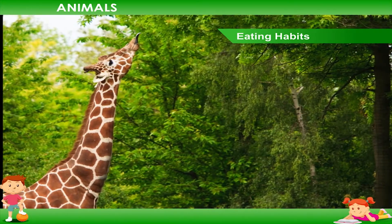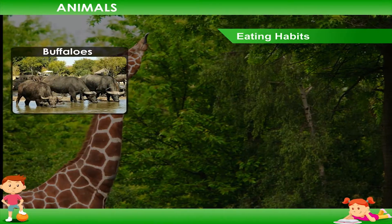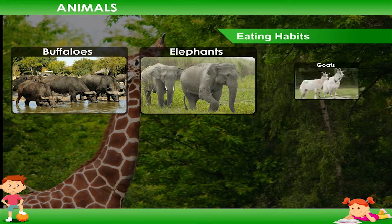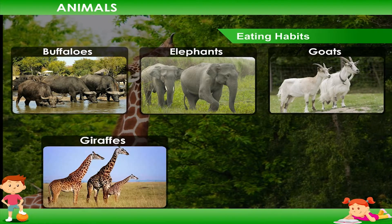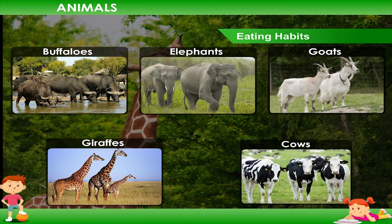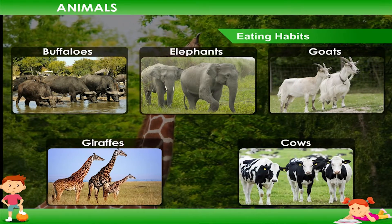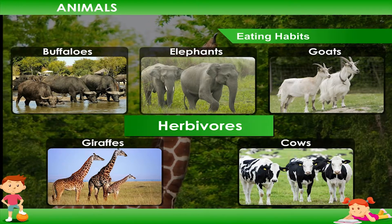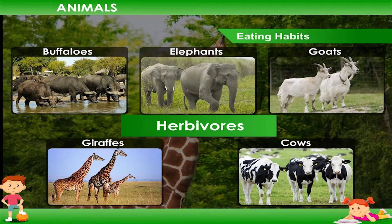Some animals such as buffaloes, elephants, goats, giraffes, cows etc. eat plants. These are called herbivores.